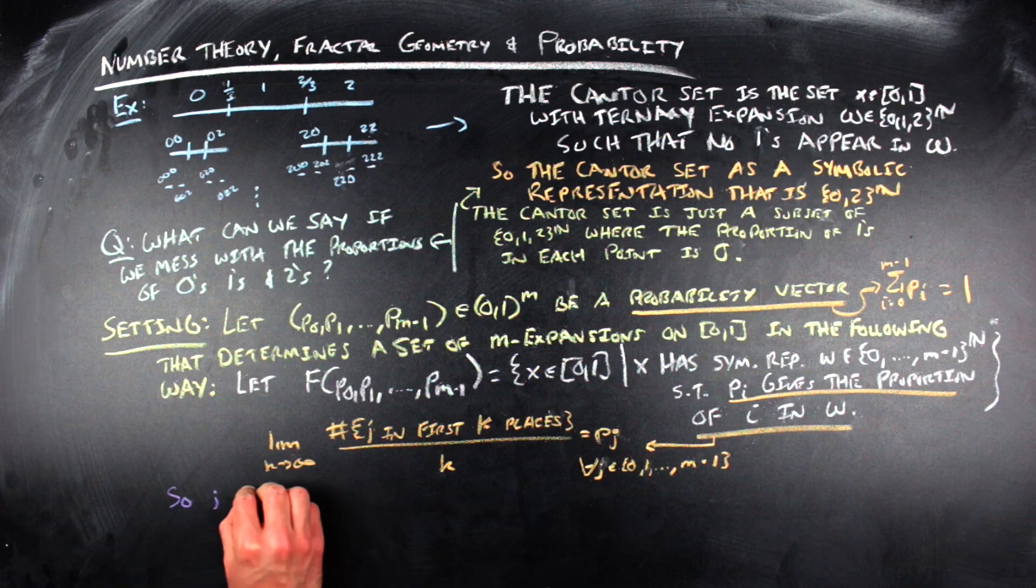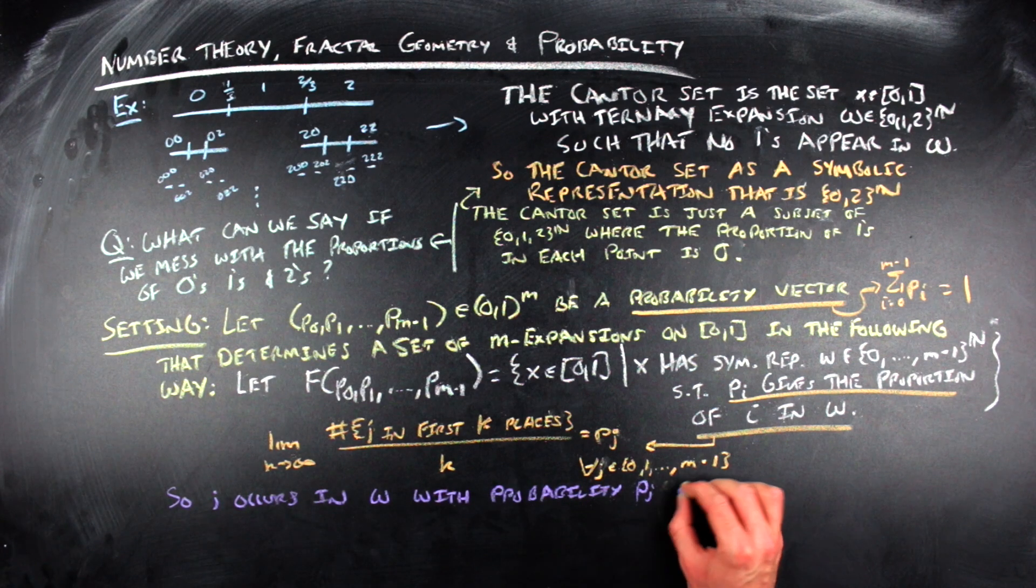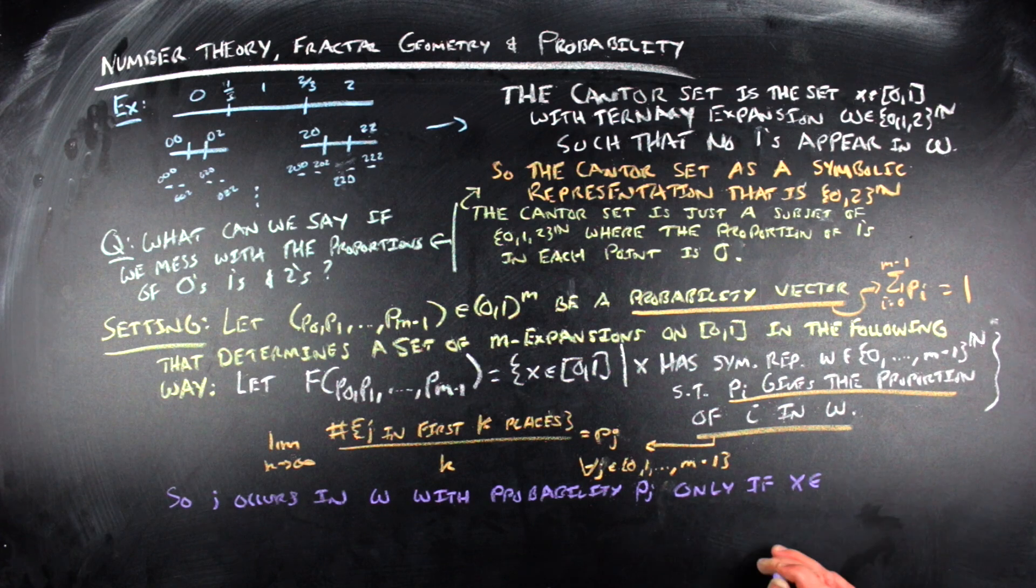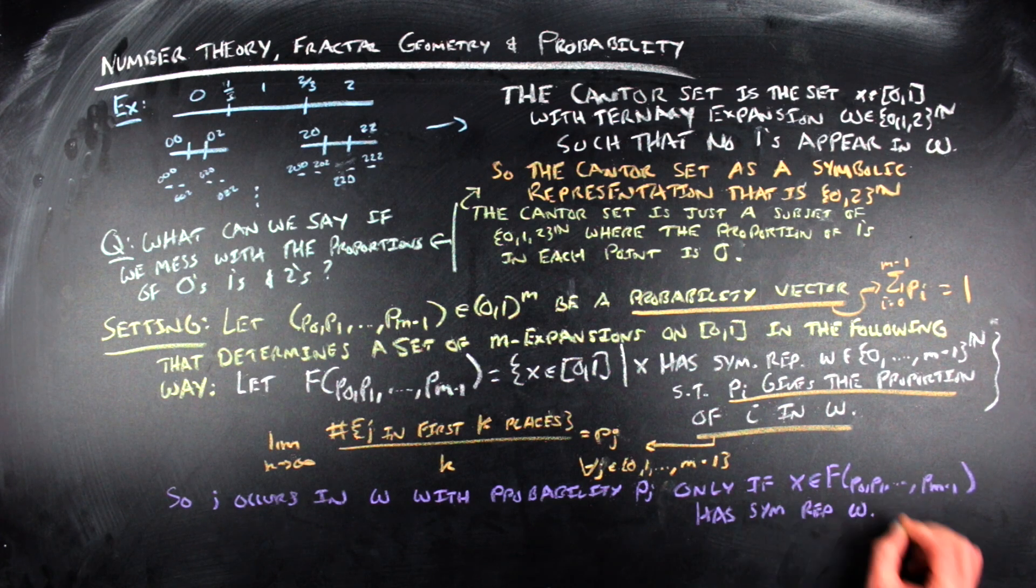That is, x is within this set if each symbol occurs in the symbolic representation of x with probability p sub j. And I'm going to often interchange the symbolic space of sequences with the unit interval in this video, which we can do here. There's some reasons why that I'm not going to get into, but for the purposes of this video, they're interchangeable.